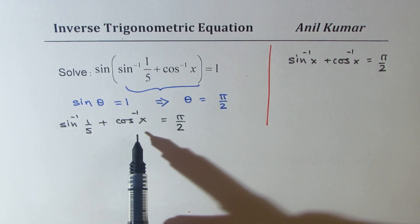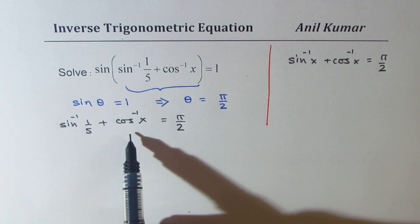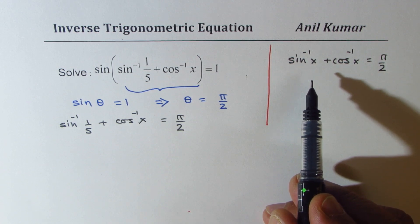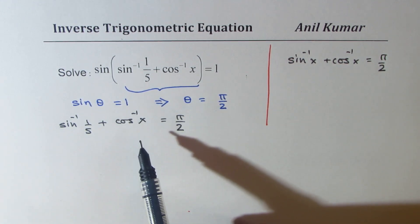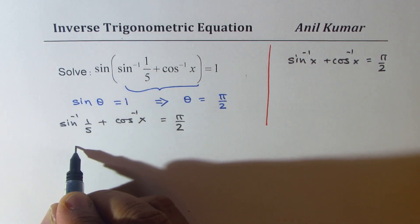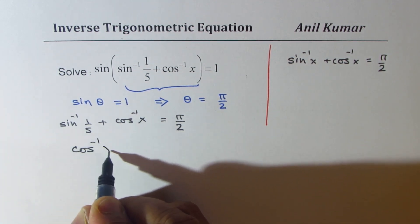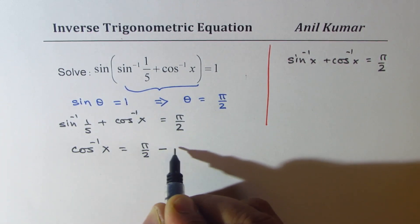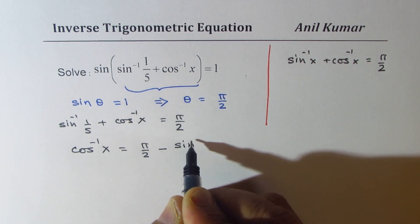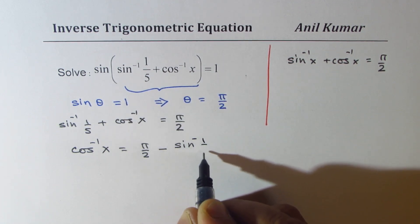Now, in this particular equation, we can isolate and then find what cos inverse x is. So we can write that what we get here is cos inverse x is equal to pi by 2 minus sine inverse 1 over 5.